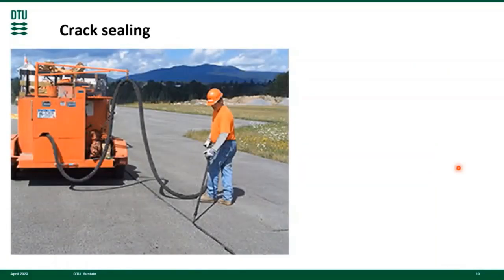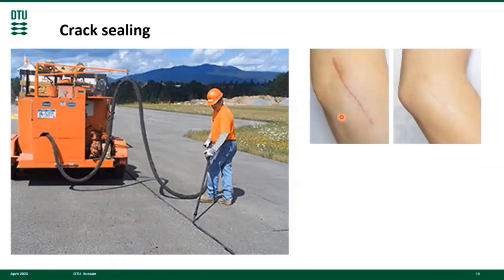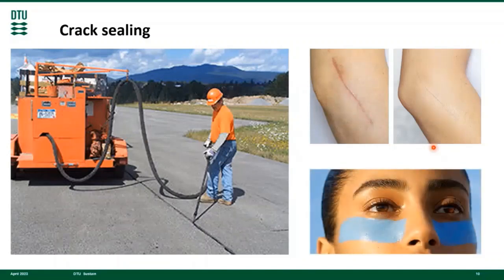Pavement cracks are sealed to prevent water from entering the structure and subgrade. This prolongs service life. A human analogy to crack sealing is makeup — one common reason for wearing makeup is covering imperfections like acne and scars. Another analogy for crack sealing is the application of sunscreen to prevent UV radiation from attacking the skin. This prolongs service life.